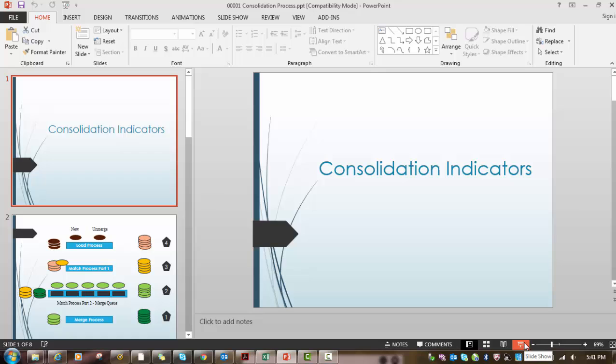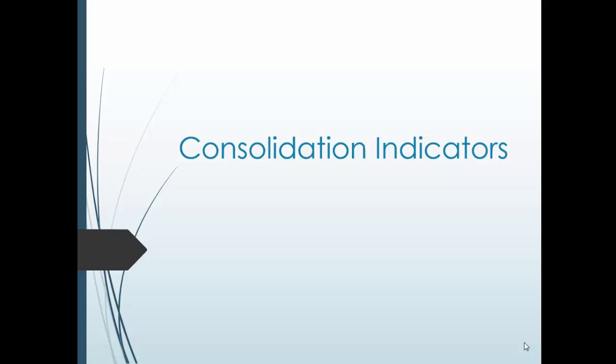Welcome back. In today's tutorial on consolidation indicators used in Informatica MDM, I got a couple of comments on the consolidation process, so I thought I should explain how consolidation happens and how the consolidation indicator changes from one value to another. The consolidation process is nothing but consolidating records. In Informatica MDM hub we have the merge process — when we run the merge process, two or more records get merged into one record. During this consolidation process there is a column called the consolidation indicator.